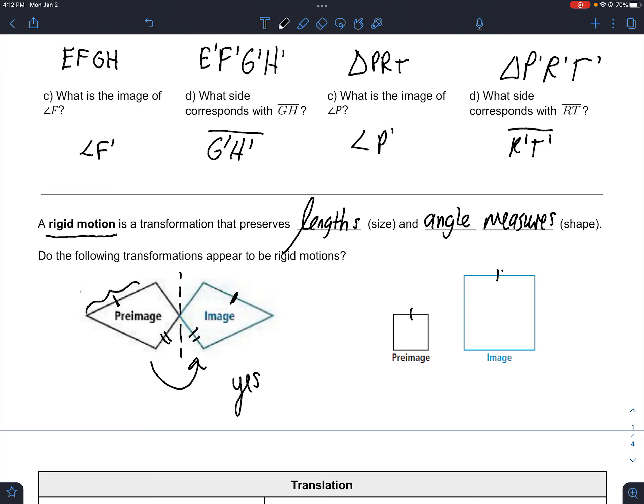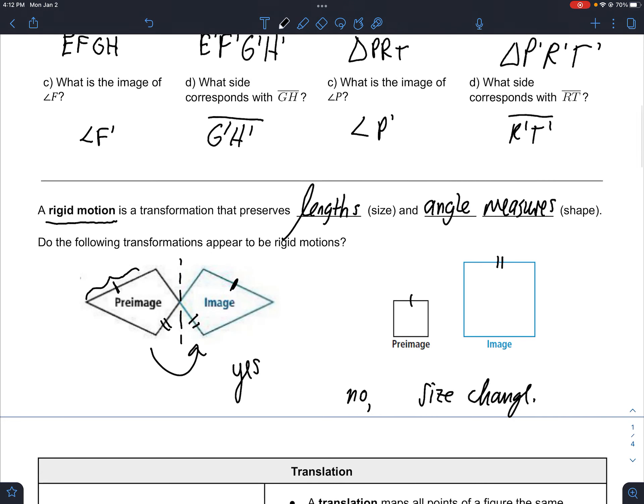Whereas this one, it's clear to see that those squares have different side lengths, so the size changed. Another example of not a rigid motion would be this diamond shape becoming like this diamond shape. All the lengths might be the same, but the shape can change - the angles are different.